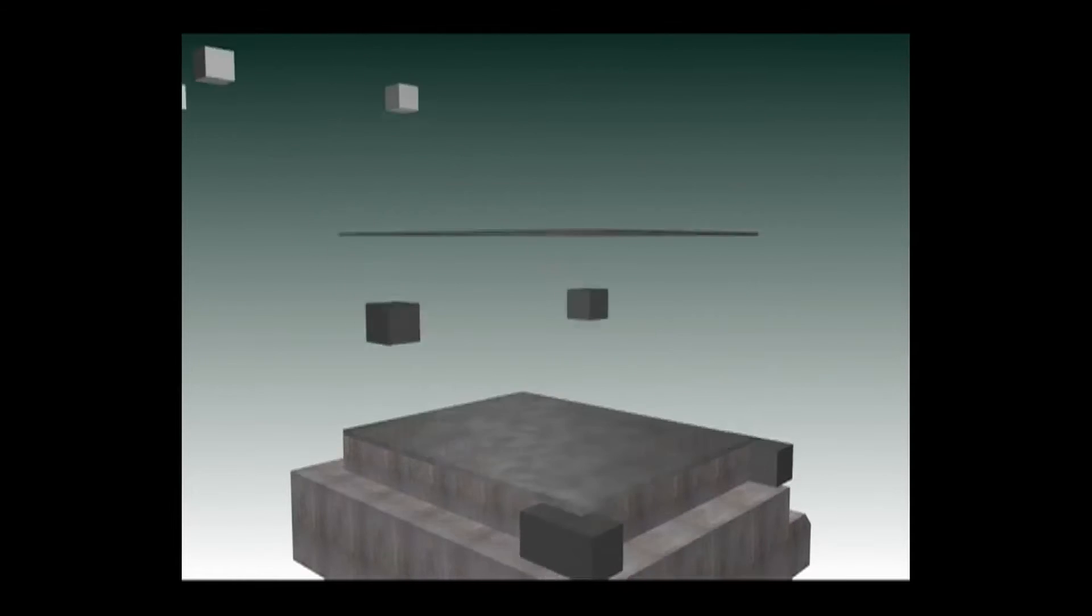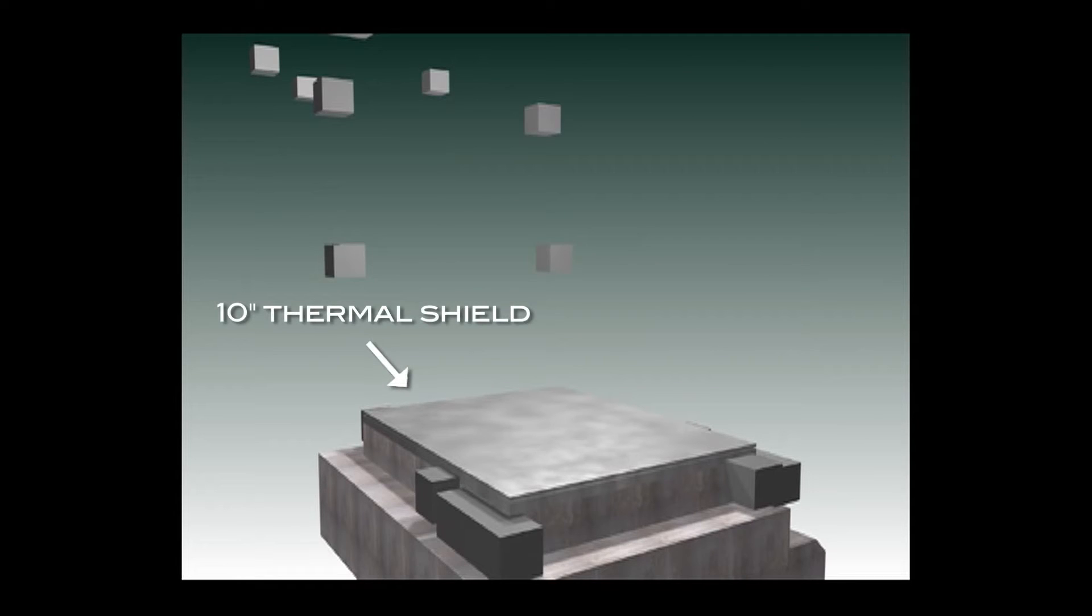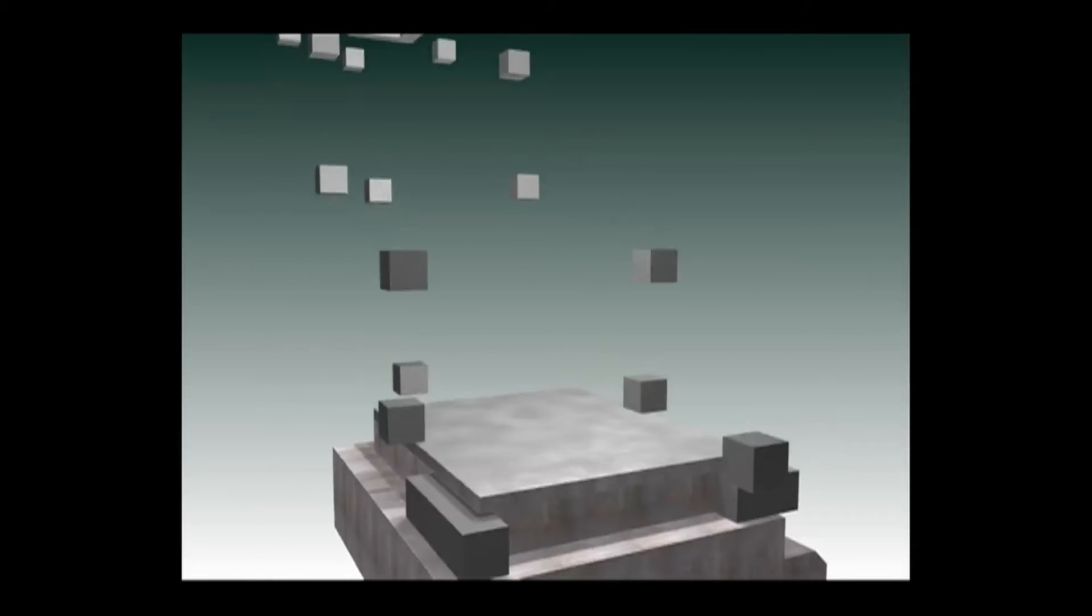The next material laid down is a 10-inch thermal shield of cast iron, which will also be added between the graphite stack and the top and side biological shields.